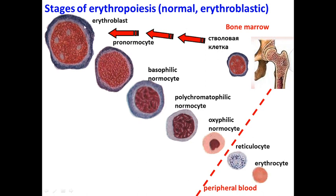As you can see, these cells from erythroblast to erythrocytes during maturation lose their size — their nucleus becomes shrunken and even disappears in reticulocytes. In reticulocytes we have only remaining particles of the nucleus, and erythrocytes have no nucleus. There is also a decrease in size during maturation of these cells.